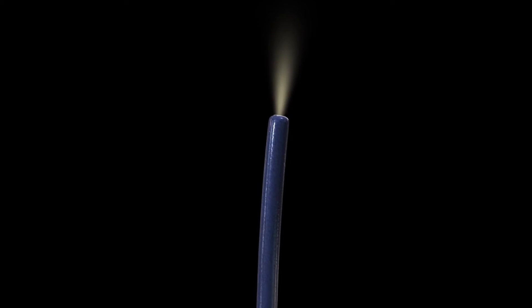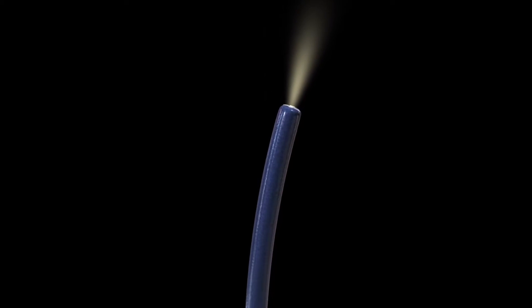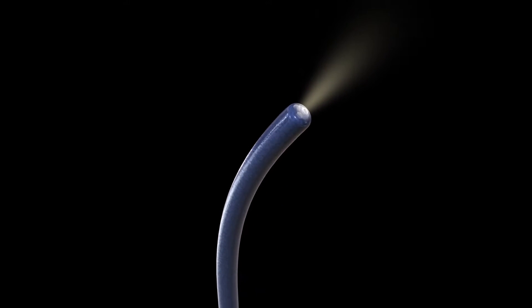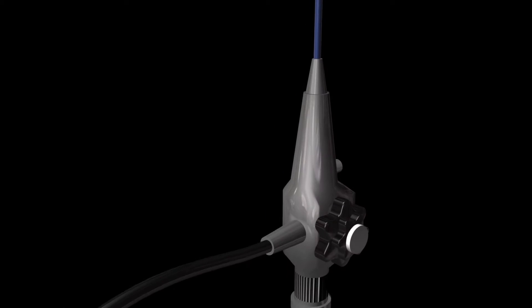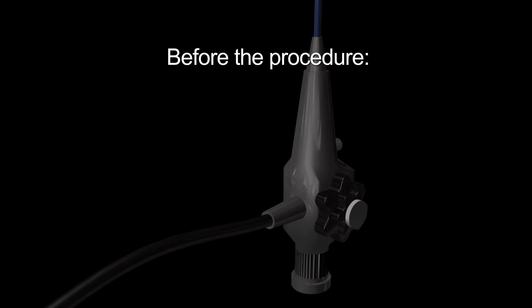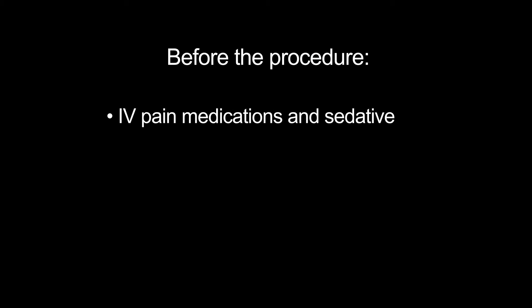The procedure is performed using an endoscope, which is a long thin flexible tube with a light and a tiny video camera attached to the end. The camera transmits an image to a monitor. Before the endoscopy, an intravenous line will be started and you'll be offered pain medication and a sedative.